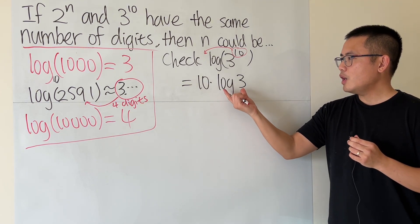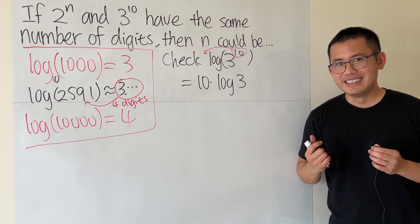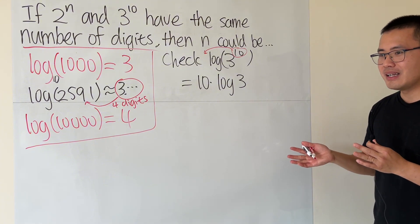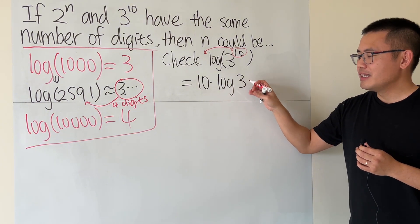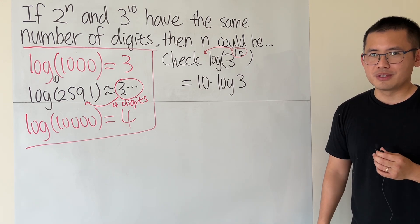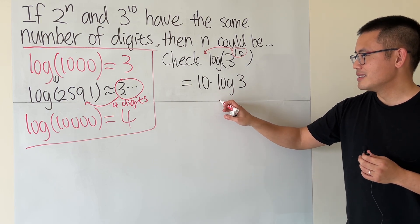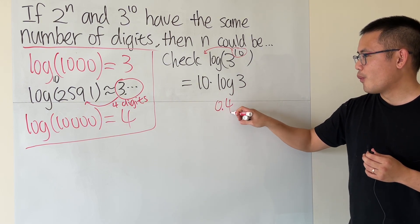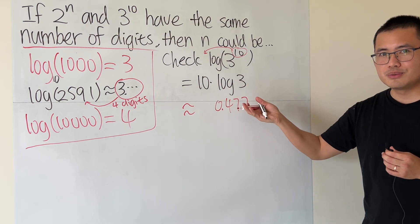And this is equal to 10 times log base 10 of 3. And now you might be wondering, how are we supposed to figure this out? I will tell you the way that we do it in Taiwan. Log base 10 of 3 is some number that you have to remember for the high school test. So this right here, I will tell you, it's about 0.477. Log of 3, you have to know. Log of 2, you also have to know.